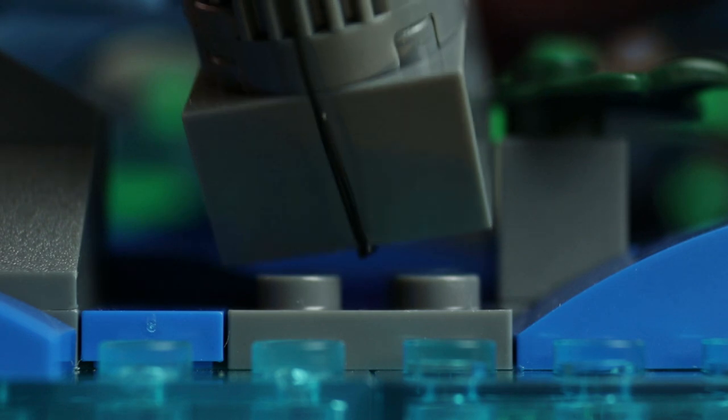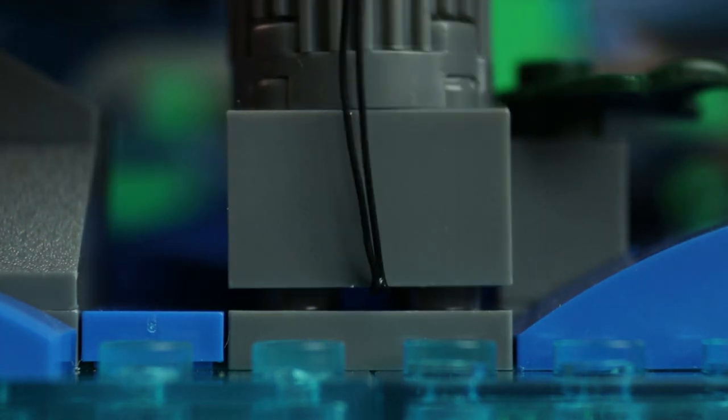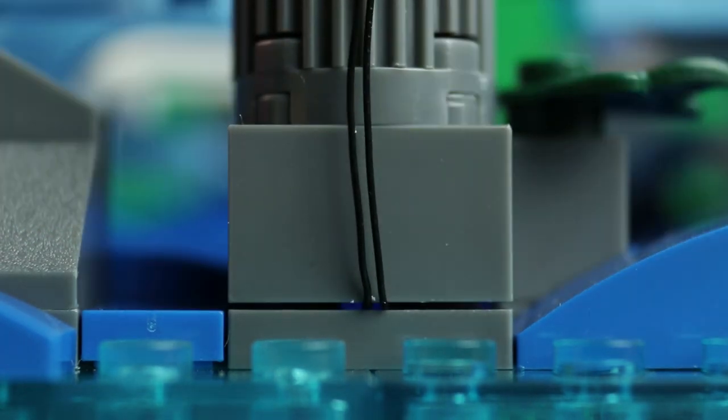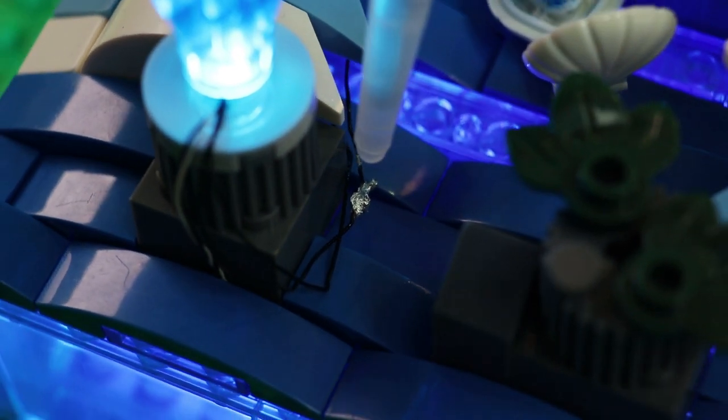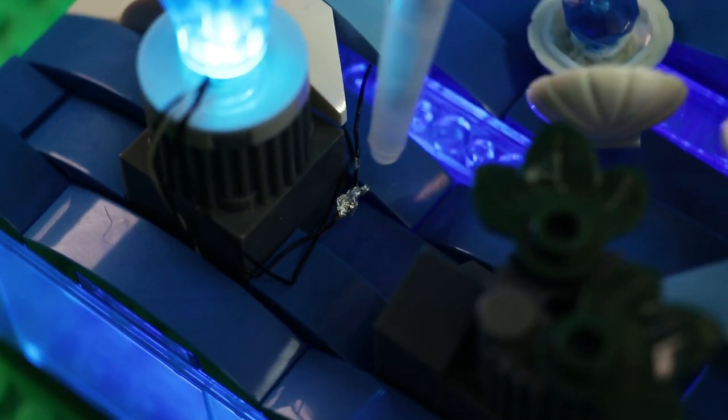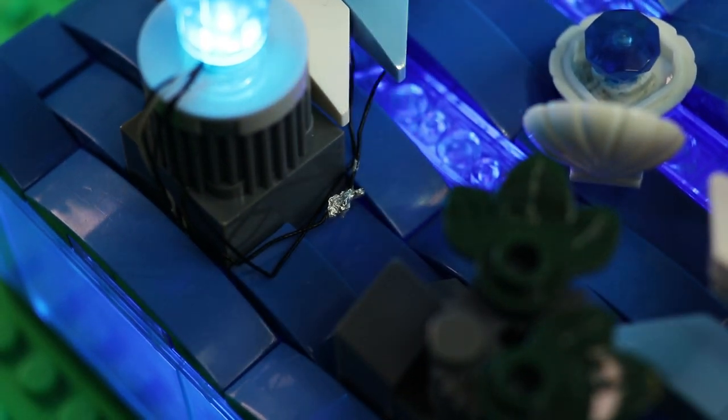When assembling, make sure that you don't put too much pressure on the fine cables. Otherwise the brick edges might cut the cables like a sharp knife. This happened to me when I was dismantling and reassembling the parts at this point, where you can currently see the solder joint.